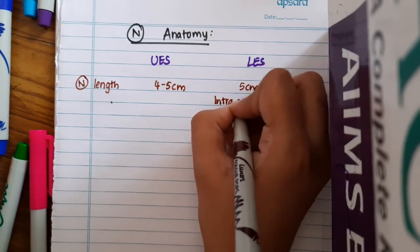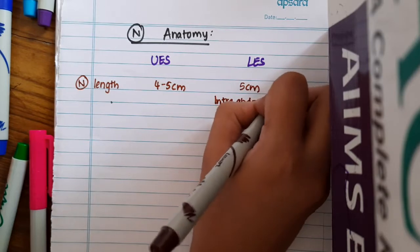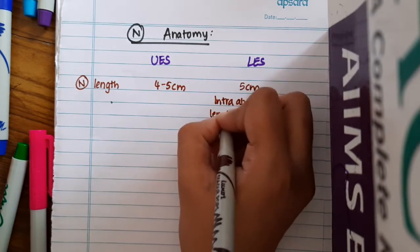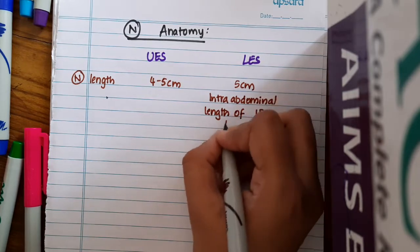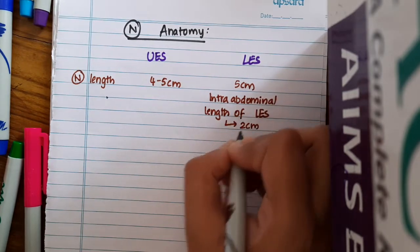But the most important is about intra-abdominal length of lower esophageal sphincter. The intra-abdominal length of lower esophageal sphincter is 2 cm.